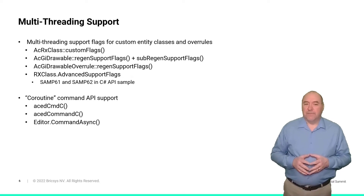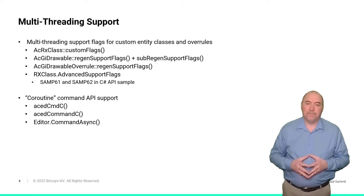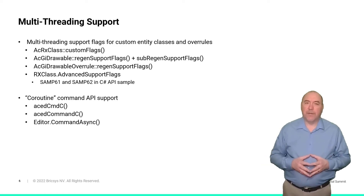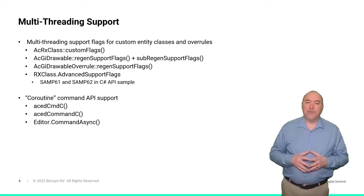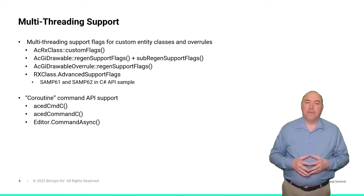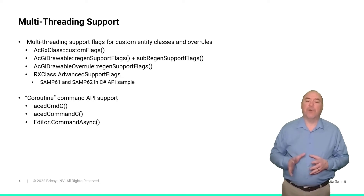It has long been possible for an entity to say yes in BRX by setting a custom RX class flag, but the way to do it is not easy to discover and not well documented. The default behavior for custom entity classes is to say no — that is, to opt out of multithreaded processing. I want to stress that support for multithreaded parallel execution in your code is not something you can support by just flipping a flag. Multithreaded support requires deep understanding and careful design. But if you have done that, BRX will enable your custom entities to opt in to parallel processing operations.